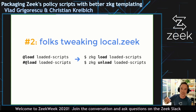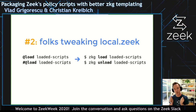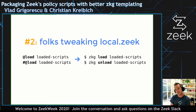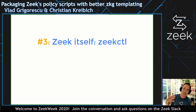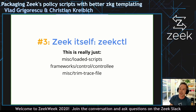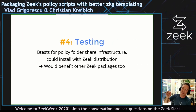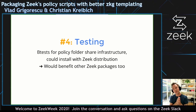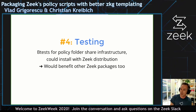A second big area is anybody tweaking local.zeek — they'll now go over to ZKG and issue commands to load and unload packages, which is arguably better but a different workflow. Then there's Zeek itself — in particular zcontrol includes a couple of things from policy, but it's really just three locations and we could manage that change. Then there's testing, which is actually interesting. The b-tests for the policy folder currently share a bunch of infrastructure — PCAPs, some scripting, some tooling — and we could install that with the Zeek distribution instead, which would also benefit any other Zeek packages wanting to do better testing.